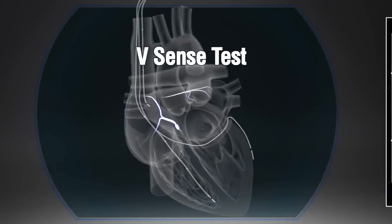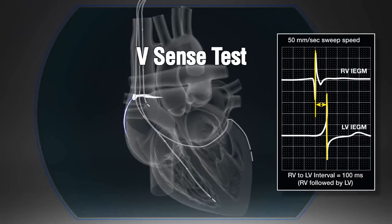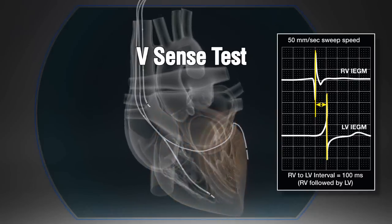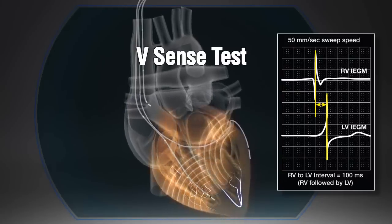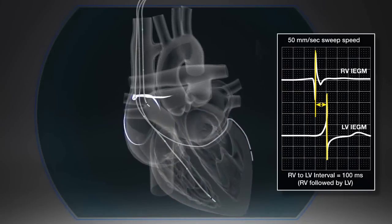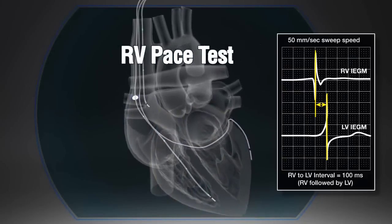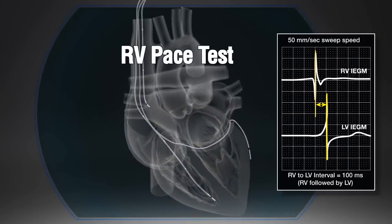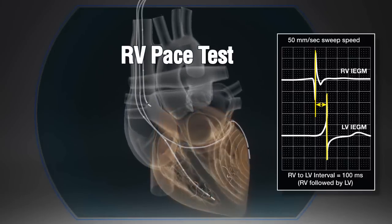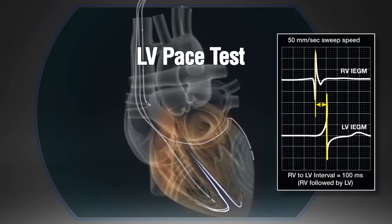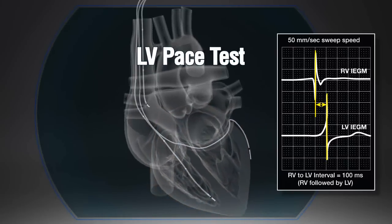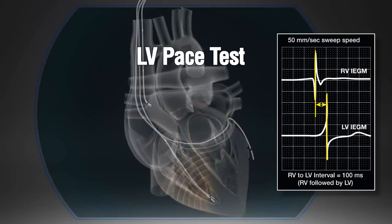VV optimization is calculated based on three measurements: V-Sense, RV Pace, and LV Pace. The V-Sense test measures the intrinsic delay between the right and left ventricles. The RV Pace and LV Pace tests are then used to compare the difference in conduction speeds. These three tests together characterize inter- and intraventricular conduction properties and recommend the optimal VV delay. The goal of VV optimization is to time right and left ventricular activation so that the paced wave fronts meet at the ventricular septum.